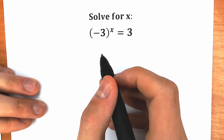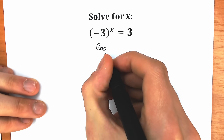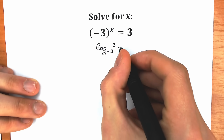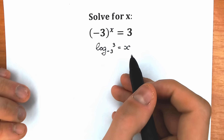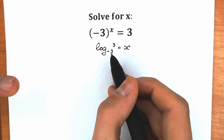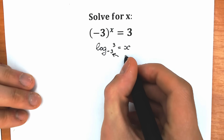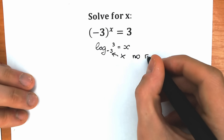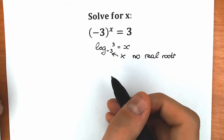First of all, let's prove that we don't have real number roots. We can rewrite this expression in terms of log: log base minus 3 of 3 equals x. But the base is minus 3, which is negative — that's a very bad thing, because the base of a logarithm cannot be negative. So this means we don't have real roots. This is our proof from school knowledge.